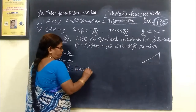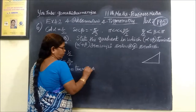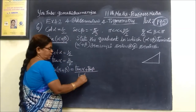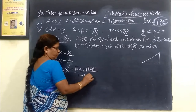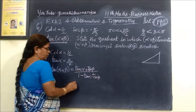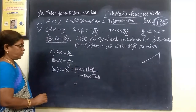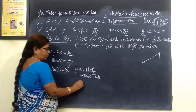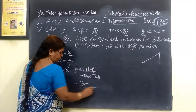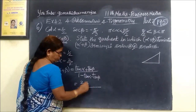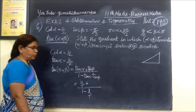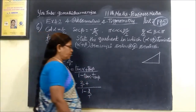So, tan alpha plus tan beta divided by 1 minus tan alpha times tan beta. This gives us the value of beta. Tan alpha equals 2 by 1, and tan beta equals 1.